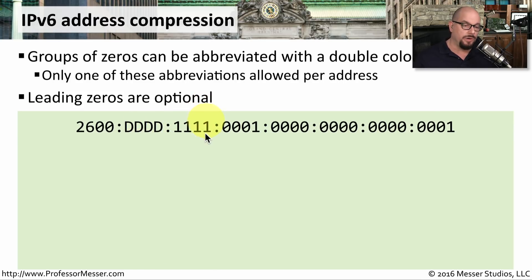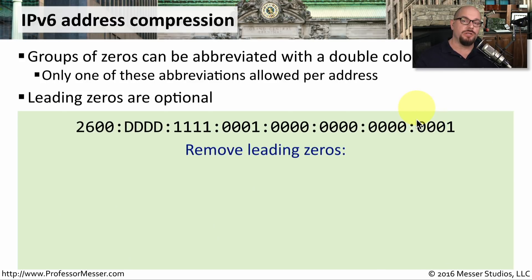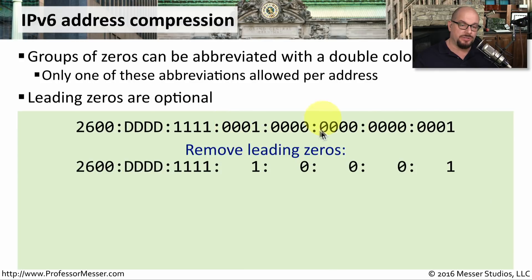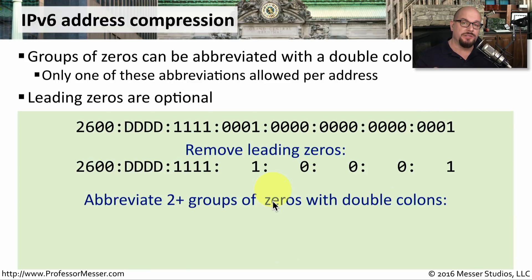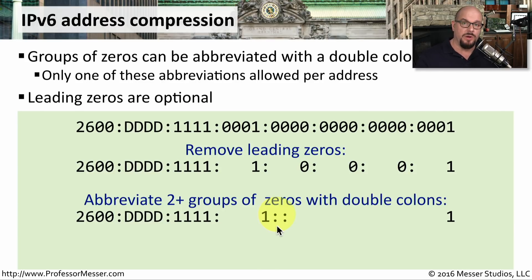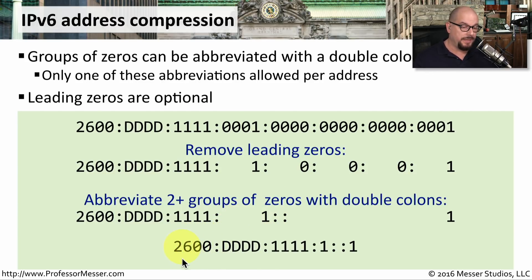Take the address 2600:DDDD:1111:0001 followed by groups of zeros and ending with 0001. One thing you can do is remove leading zeros from any of the groups. Looking at these groups, there are some leading zeros, and the last grouping has three zeros and a one — we can remove those three zeros. We can also eliminate consecutive groups of all zeros by replacing them with a double colon. Our final compressed IPv6 address becomes 2600:DDDD:1111:1::1.